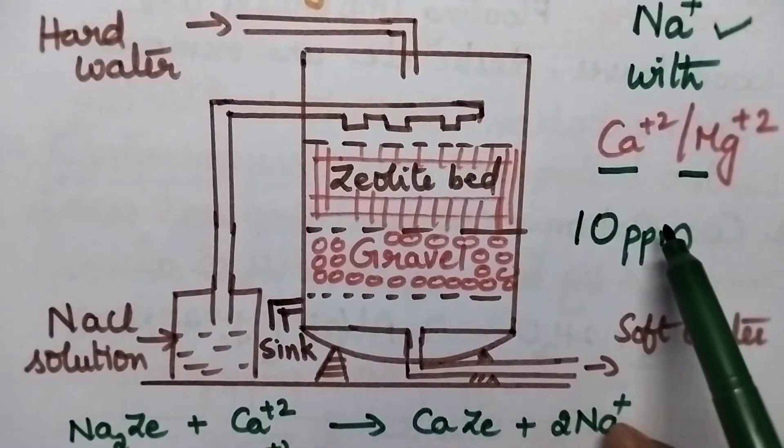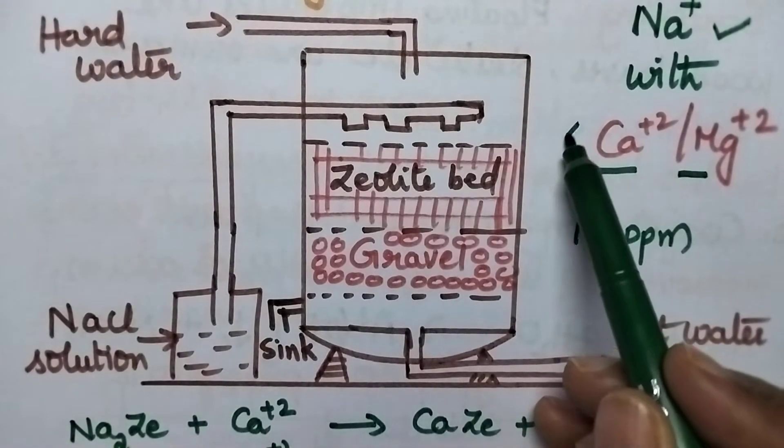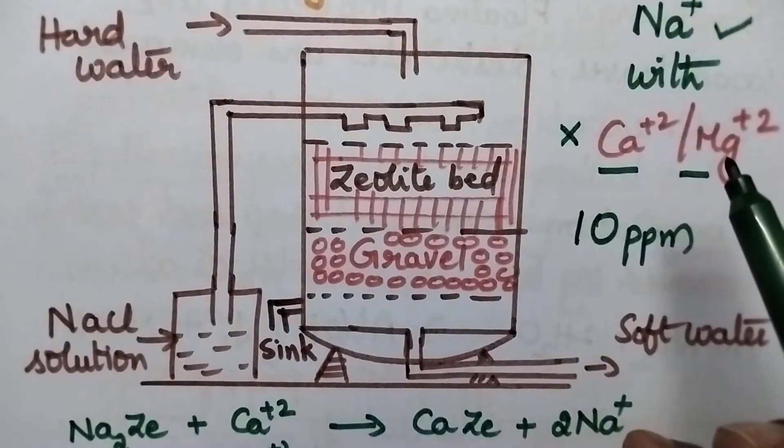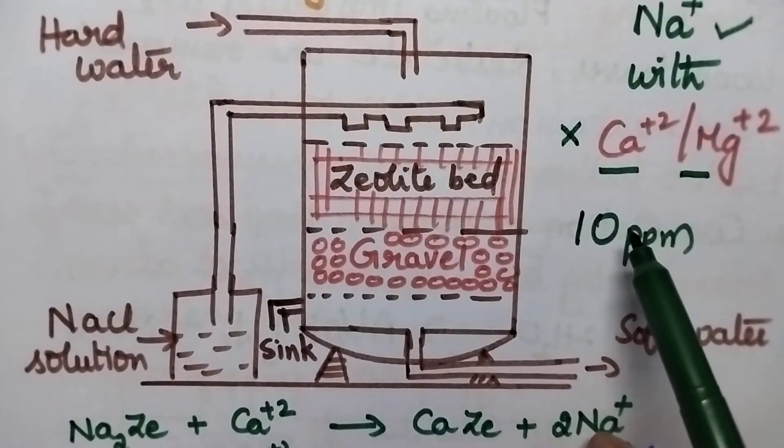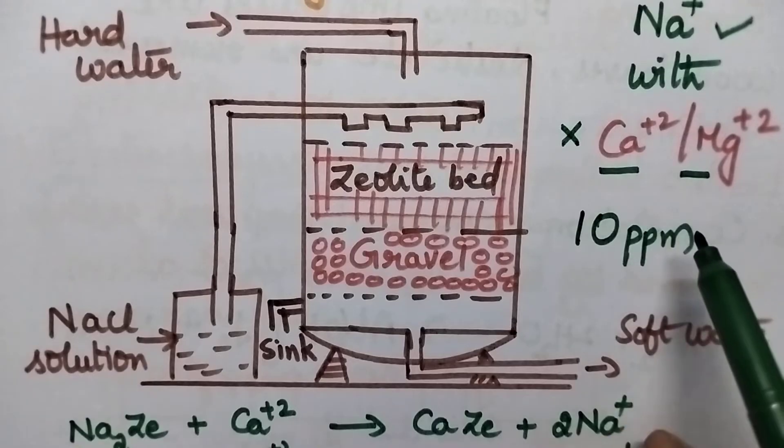With the result the hardness producing cations will be removed from the hard water whereas the anions are left in the treated water.